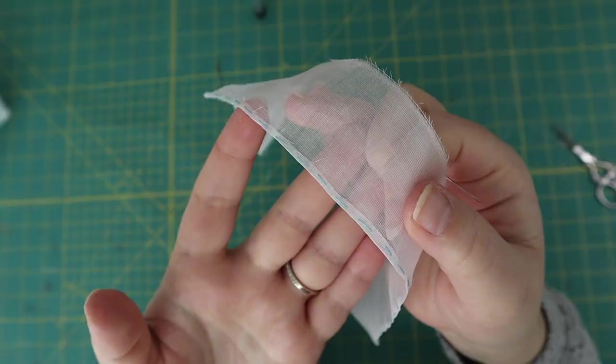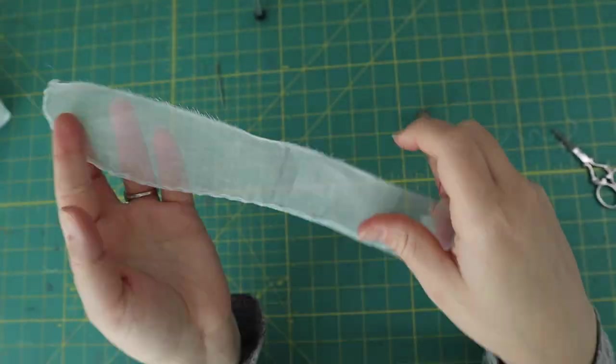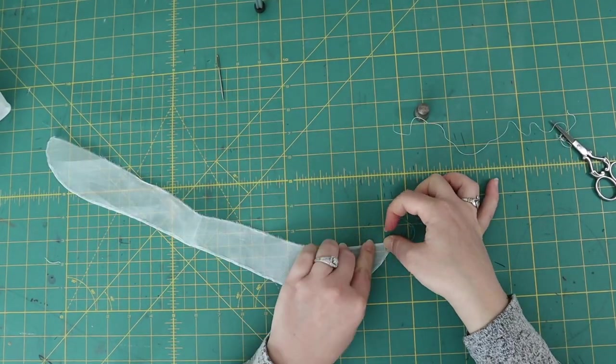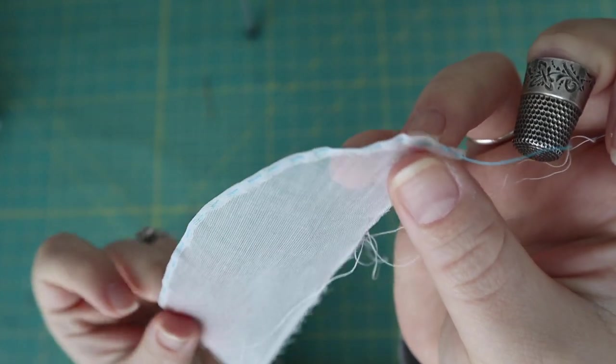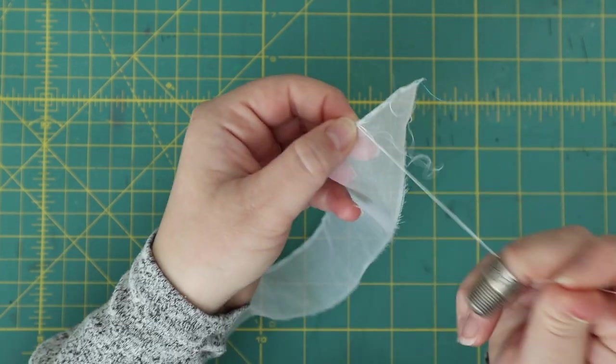The first step is to hem the band that goes over the head. In order to prevent the curved edge from stretching as I sew, I'm first basting 1/8th of an inch along this side. Once that's basted, I'm folding it over again and stitching a tiny 1/16th of an inch all along the same side.